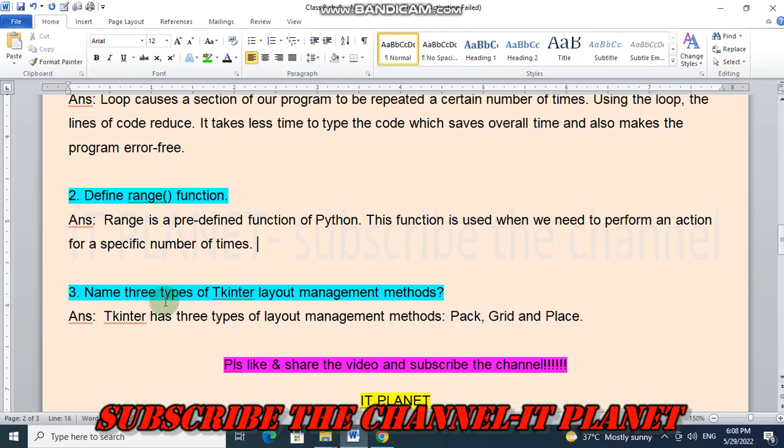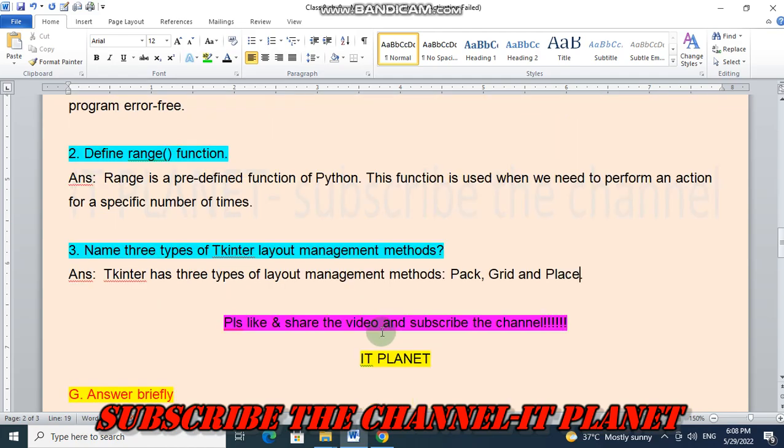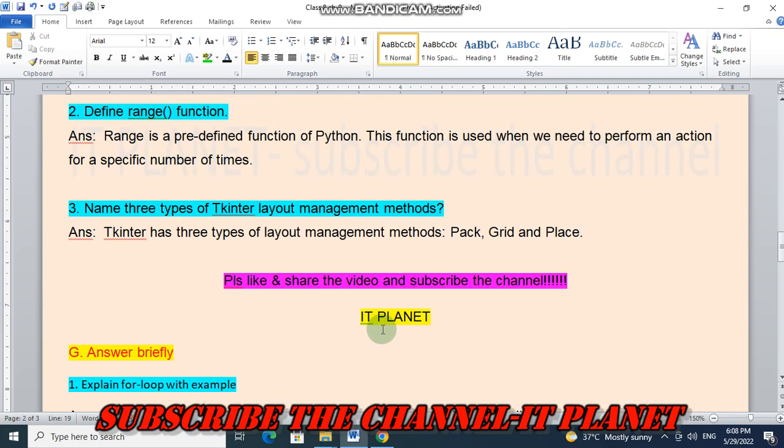Next, number three, name three types of Tkinter layout management methods. So Tkinter has three types of layout management methods: pack, grid, and place. So friends, if this video is helpful to you, then please like and share the video and subscribe the channel. Most importantly, subscribe the channel IT Planet.